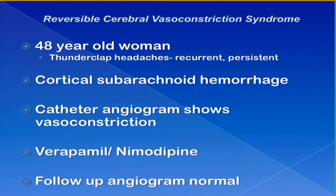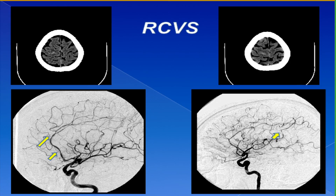A typical example: a young woman who developed recurrent thunderclap headaches persistent over 7 to 10 days, ultimately had a worse hemorrhage, was diagnosed with cortical subarachnoid hemorrhage, and had a cerebral angiogram showing areas of vasoconstriction. We treated her with calcium channel blockers — usually verapamil or nimodipine — and on a follow-up angiogram a month and a half later everything was normalized. Her CT on admission showed the subtle convexity subarachnoid hemorrhage, the angiogram showed segmental vasoconstriction, which all resolved on follow-up.